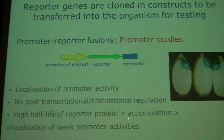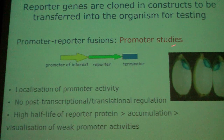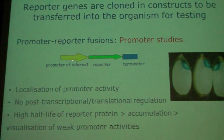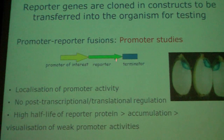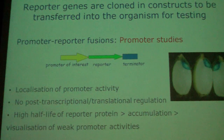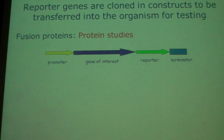Reporter proteins typically have a very high half-life — much more stable than endogenous gene products. This means there is an accumulation of reporter activity, and you can visualize even weak promoter activities. Promoter studies let you measure promoter strength and localization of its activity, but there is no guarantee that the endogenous messenger RNA would be stable in these tissues.